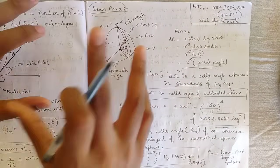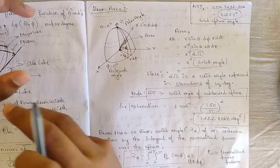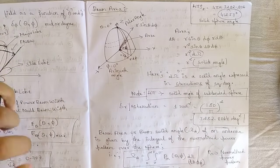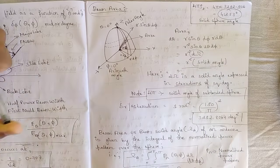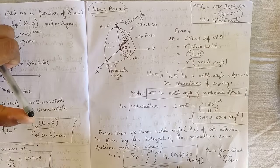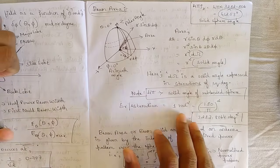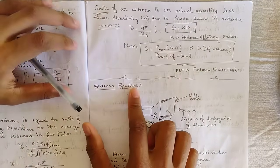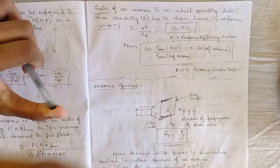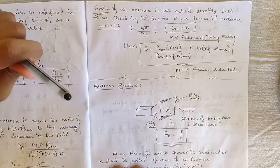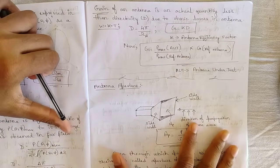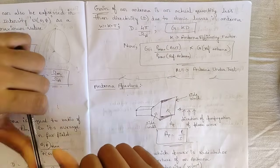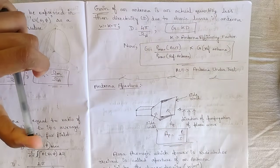That's all for this video. Starting from beam area — how it is represented, in what coordinate system, and its expression — everything has been covered, along with directivity and gain of an antenna. In the next video we are going to discuss antenna aperture and the relationship between antenna aperture and beam area. There is a simple derivation already done in the notes which will be covered in the upcoming video. Please like this video, subscribe to our channel, and keep supporting us.